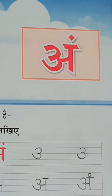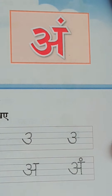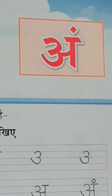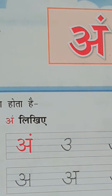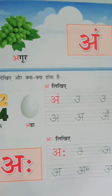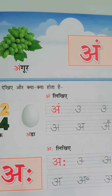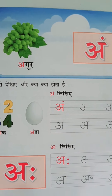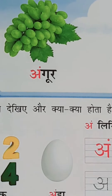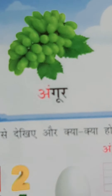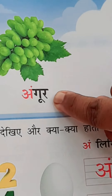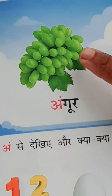Dekhiye, A ke upar ek bindu daala hai — you can see a dot upon letter A. Isay hum Anuswar kehte hai. You have to pronounce this Aam. Aam se Angur — Angur means grapes. We all like to eat grapes.